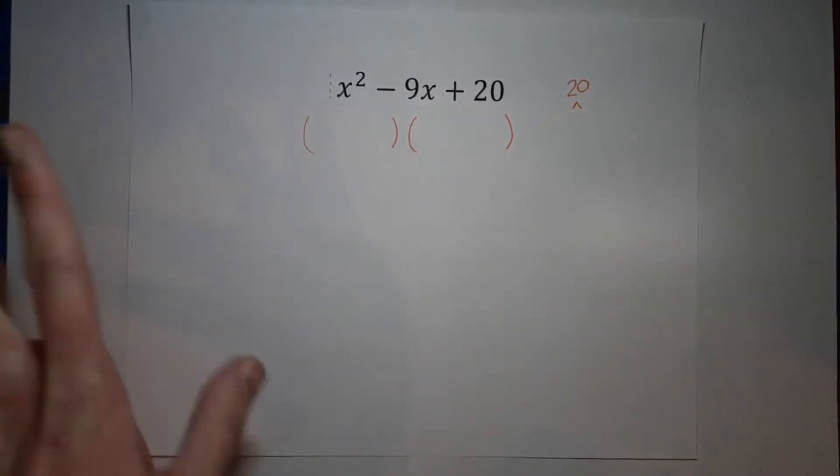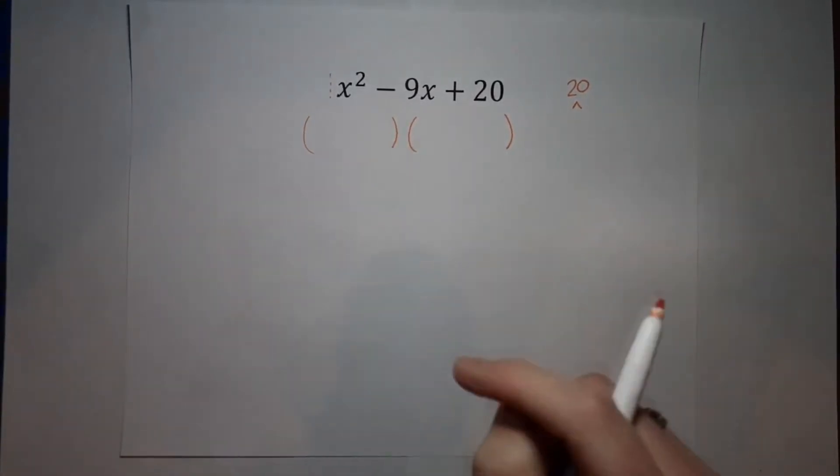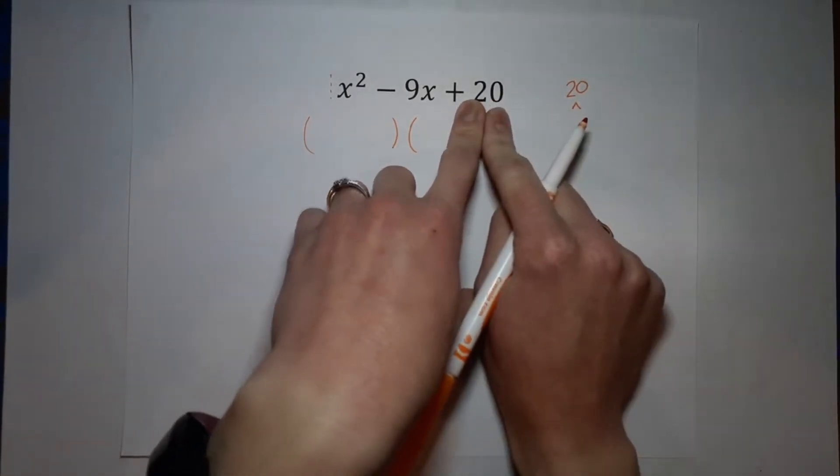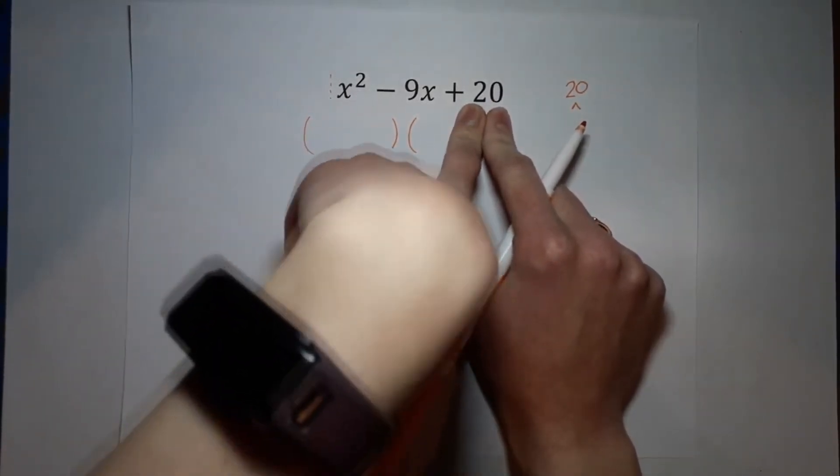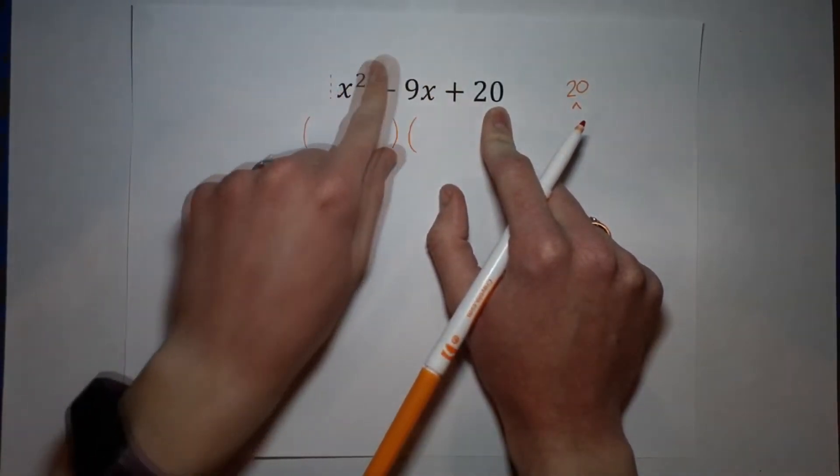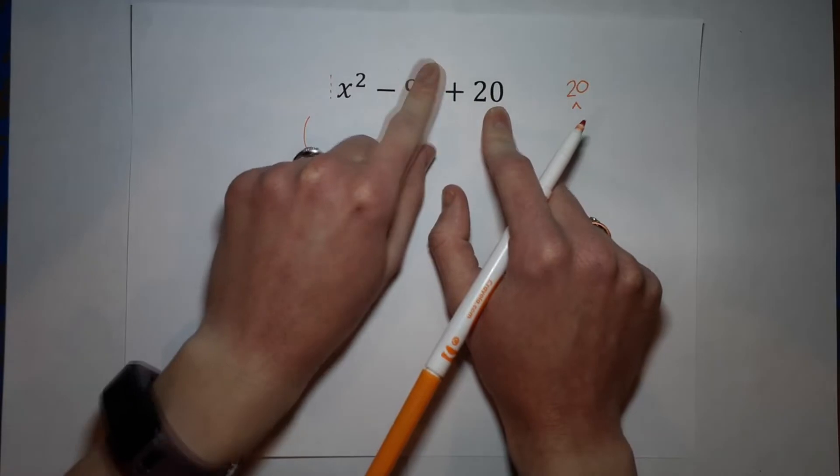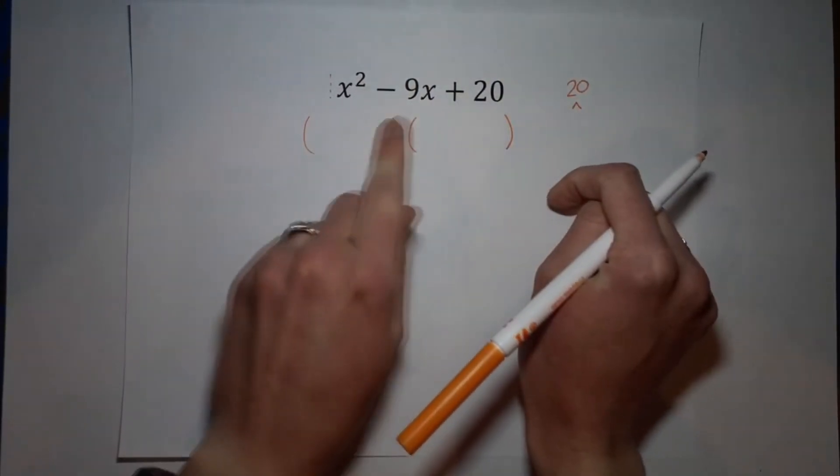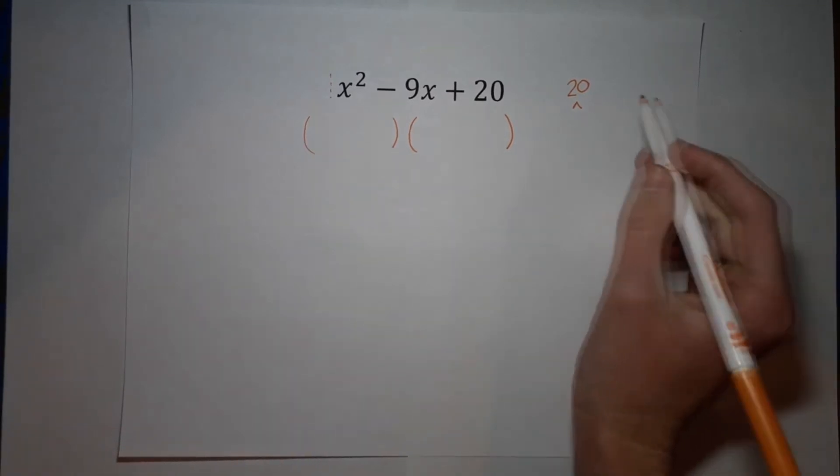We need to find two numbers that multiply to 20 and add to negative nine. Where'd that negative nine come from? This number right in the middle. So we need a number that multiplies to 20, adds to negative nine.